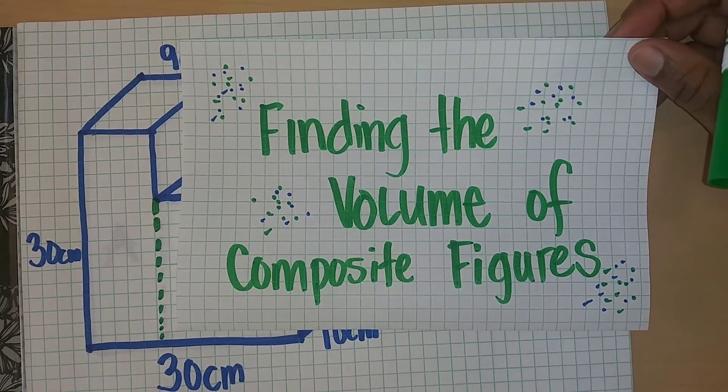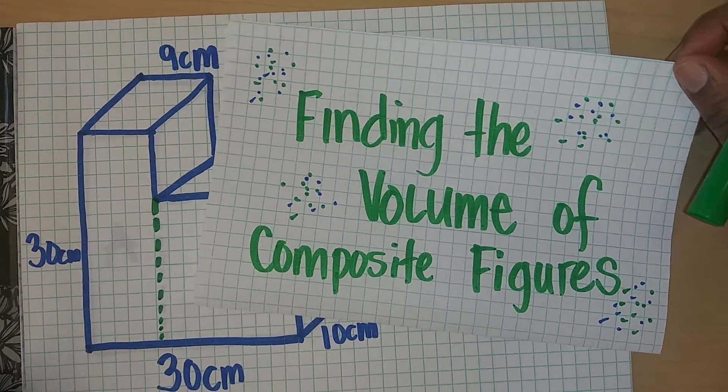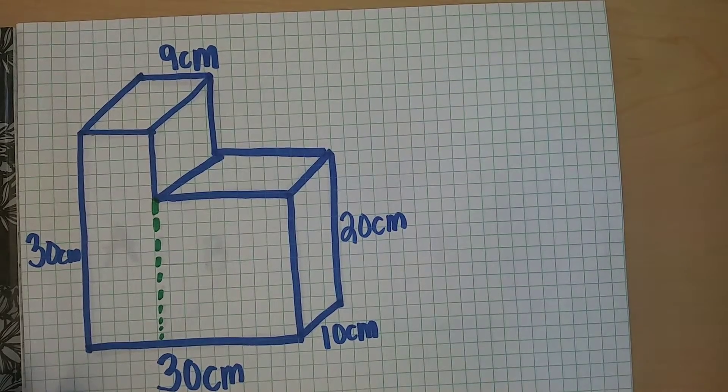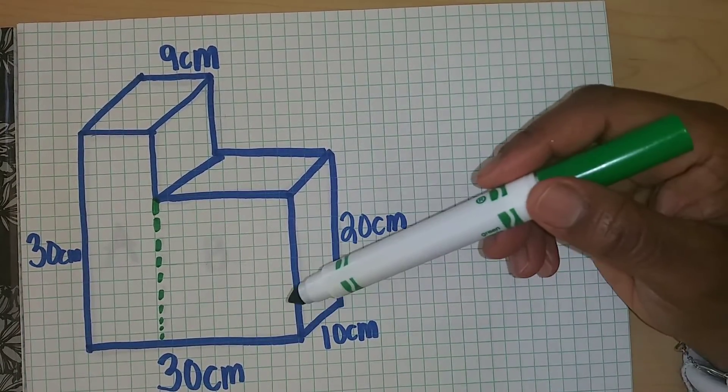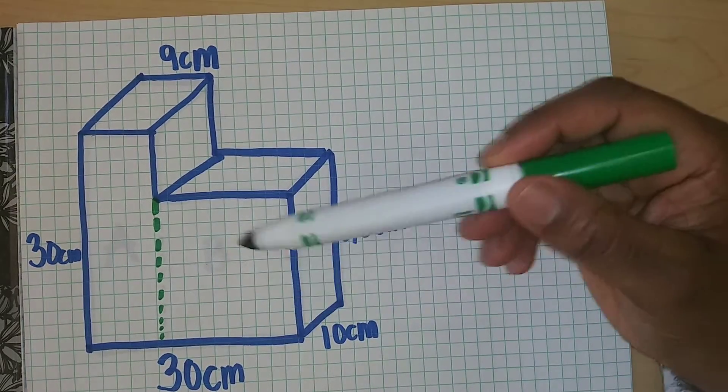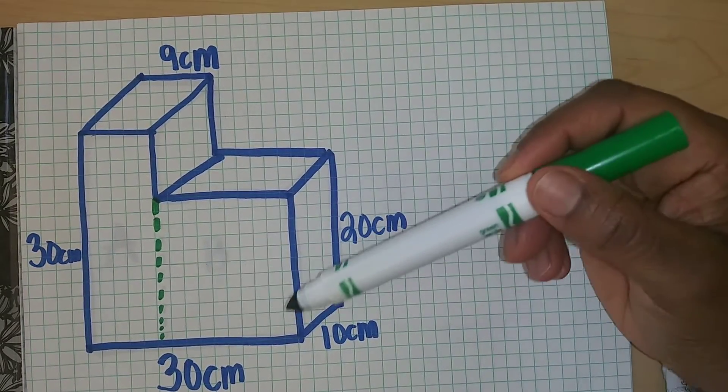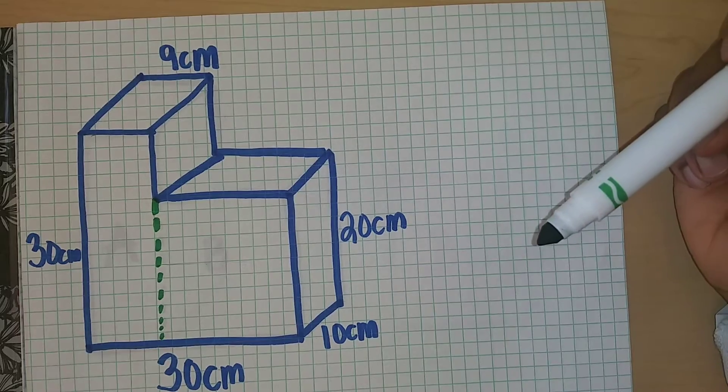In this video we'll be finding the volume of composite figures. If you take a look at this figure, volume is the amount of space inside of a figure and this particular one is made up of more than one rectangular prism, that's why it's considered composite.